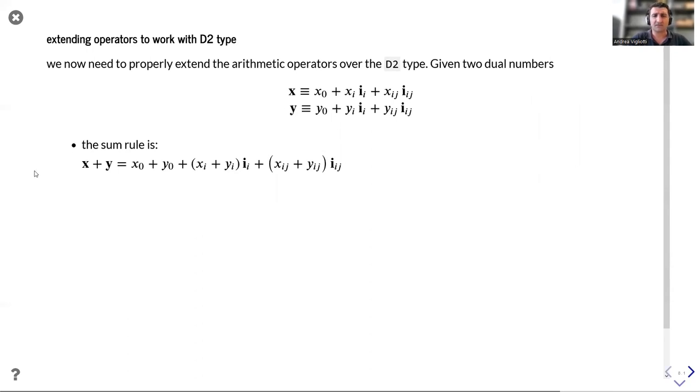Let's see how to extend the ordinary arithmetic operators over d2. We proceed in the same way as it is done for forward mode automatic differentiation. That is, every time we evaluate an expression, we evaluate not only the result, but also the derivatives of the result with respect to all of the independent variables. And we do this for the first and second order derivatives.